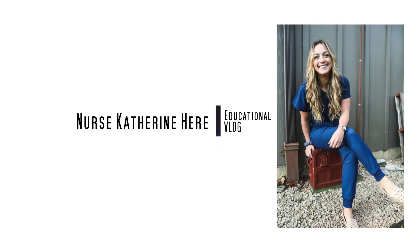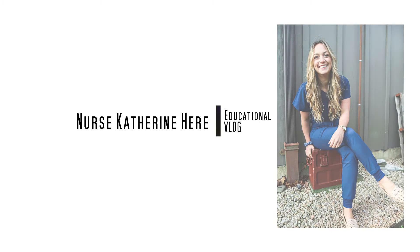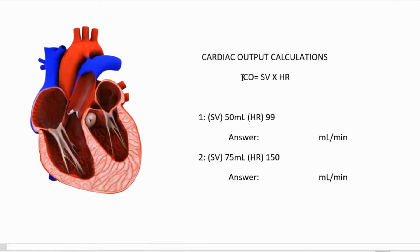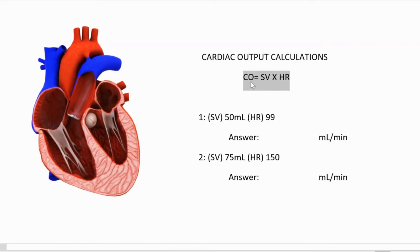Let me share my screen now and we will do this calculation together. Here we have our cardiac output calculation. The formula is: cardiac output equals stroke volume times heart rate.